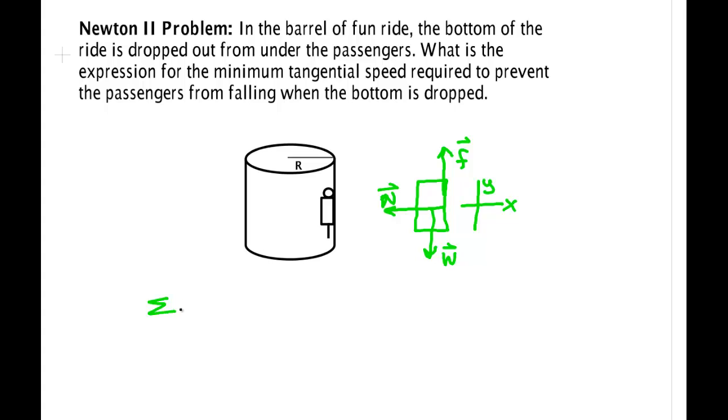We now write Newton's laws. Sum of the forces in x is m a_x. Sum of the forces in y is m a_y. The person we don't want them to accelerate in the y direction. So this is zero.